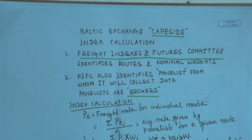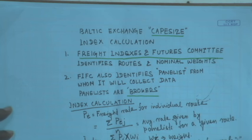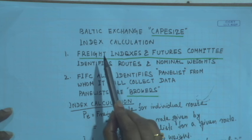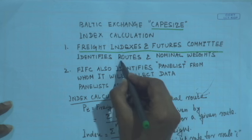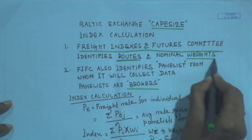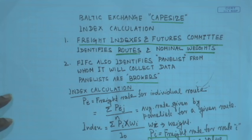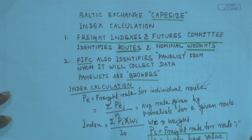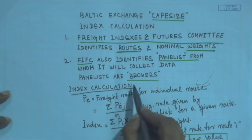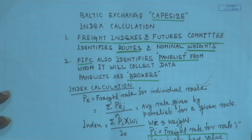Let us take an example to see how the Baltic Exchange Cape Size Index is calculated. The body that calculates it is the Freight Index Futures Committee (FIFC). Every exchange has a committee whose responsibility is to identify which routes will be part of the index and what weights are associated with each route. The FIFC also identifies the panelists from whom it will collect data.